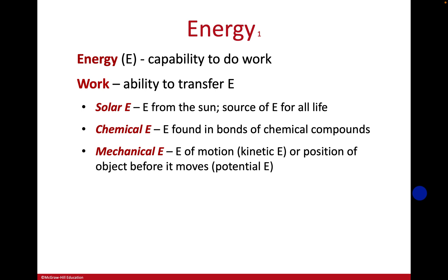There are different types of energy, and three we're going to concentrate on. First, solar energy — energy from the Sun or light — is the initial source of energy for all living organisms. Second, chemical energy is energy stored in the bonds of chemical compounds, and it's the kind of energy we use when we get energy from food, or when plants get energy from the food they make.